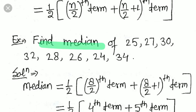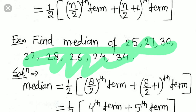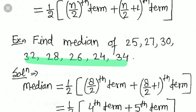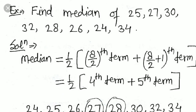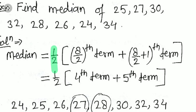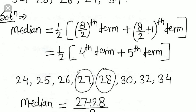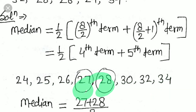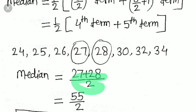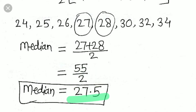For example: find the median of 25, 27, 30, 32, 28, 26, 24, and 34. The total number of terms is 8. So the median involves the (8/2) = 4th term and the 5th term. Arranging in ascending order and identifying the 4th and 5th terms, we add them together.